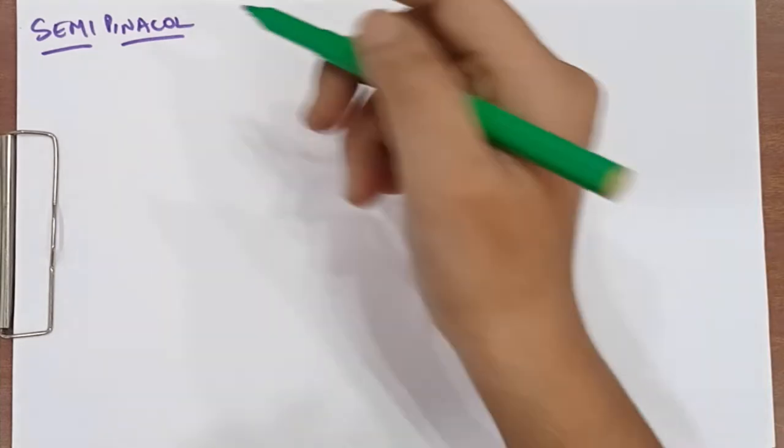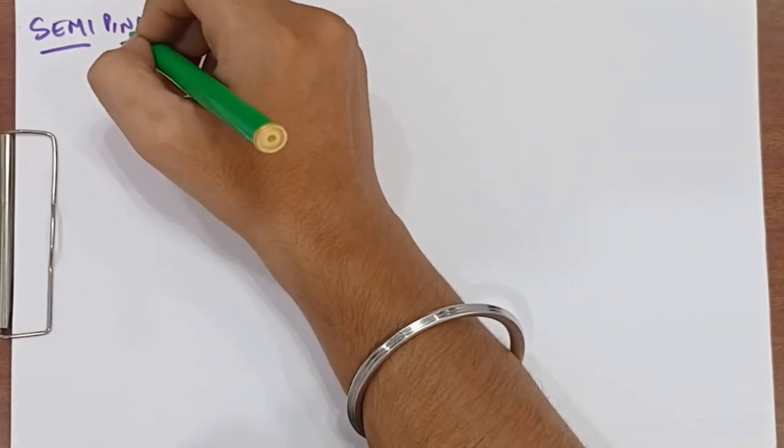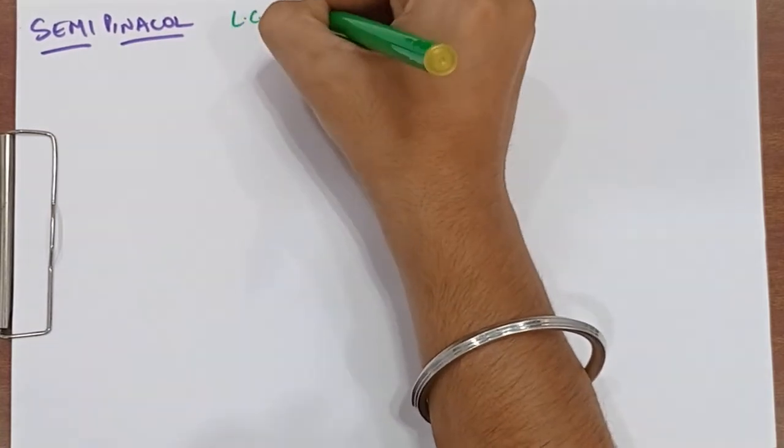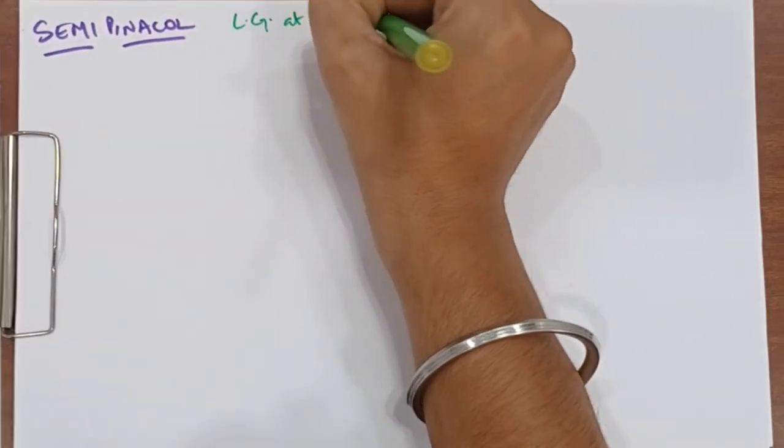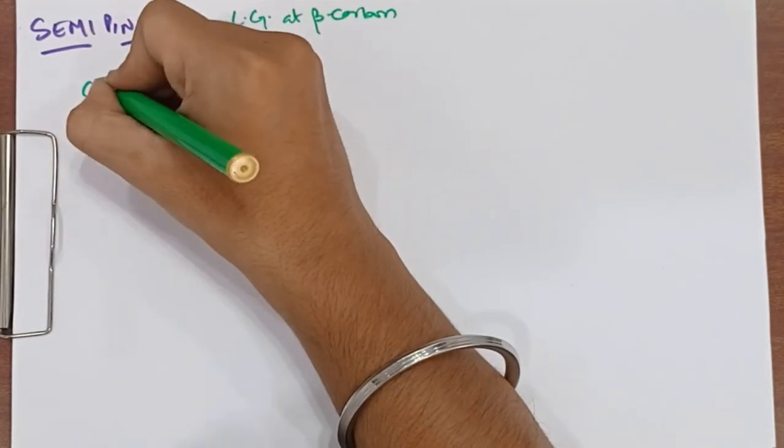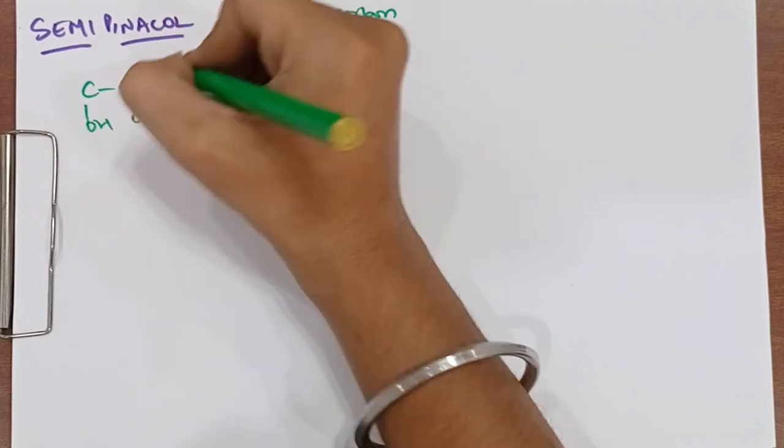We have pinacol. In the last video, we had 1,2-diols with two carbons and tertiary carbons. Here in semi-pinacol rearrangement, we have those alcohols that have a very good leaving group at beta carbon. Those alcohols are semi-pinacol.